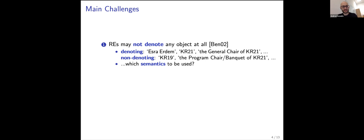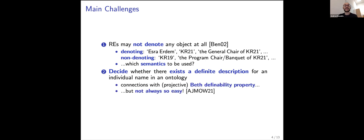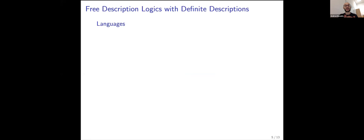This is well studied in the free logic literature. On the other side, in order to find meaningful definite descriptions to replace uninformative individual names, a first step is to decide whether a definite description exists for an individual name in an ontology. This has connections with the so-called projective Beth definability property, enjoyed by several logics — most notably first-order logic — but it is not always straightforward, particularly when restricting to description logic languages.